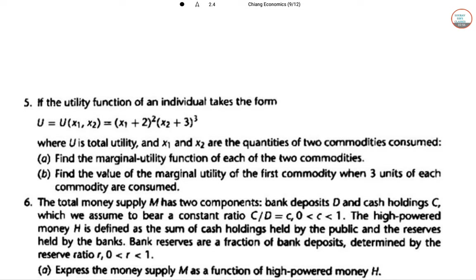Question 5: If the utility function of an individual takes the form where U is this, find the marginal utility function of each, and find the marginal utility of the first commodity when three units of each commodity is been purchased.